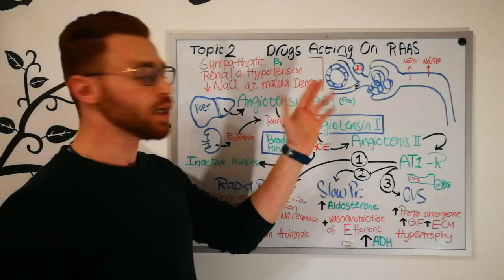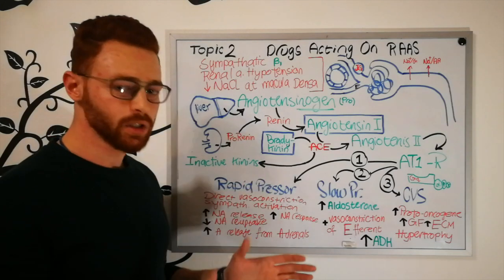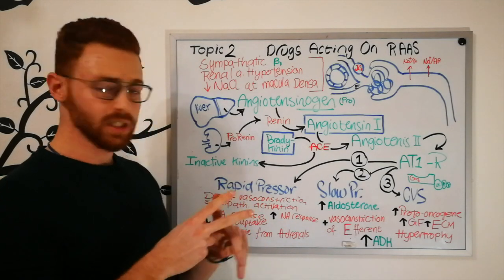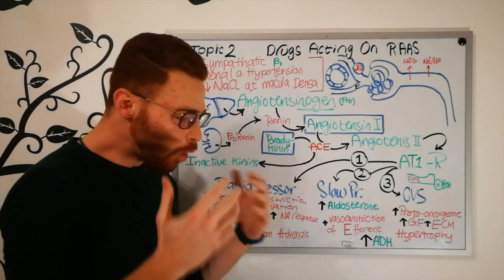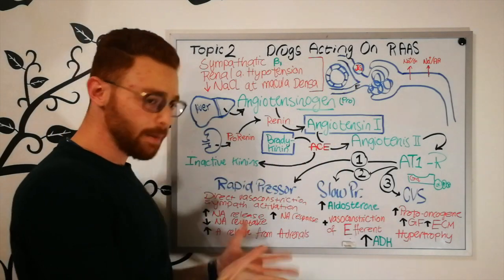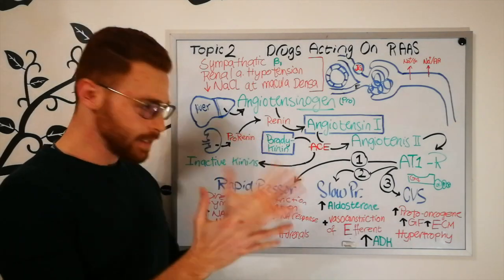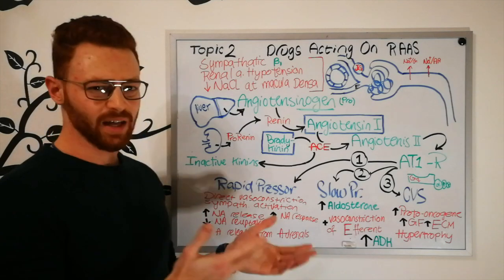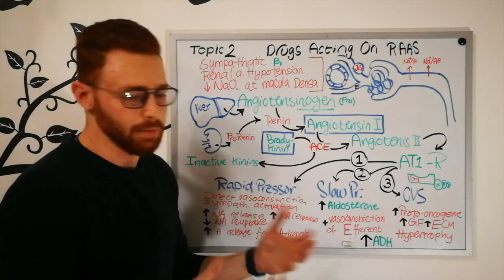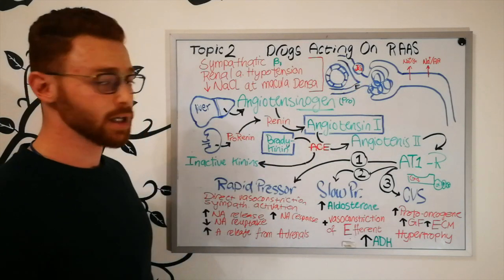The first cause activating the JG cells is renal artery hypotension — a decrease in the blood pressure of the renal artery. This can happen due to systemic hypotension, where blood pressure is decreased everywhere in the body including the renal artery. It can also be an isolated renal artery hypotension caused by renal artery stenosis, where the systemic blood pressure may be normal but the renal artery pressure is reduced.